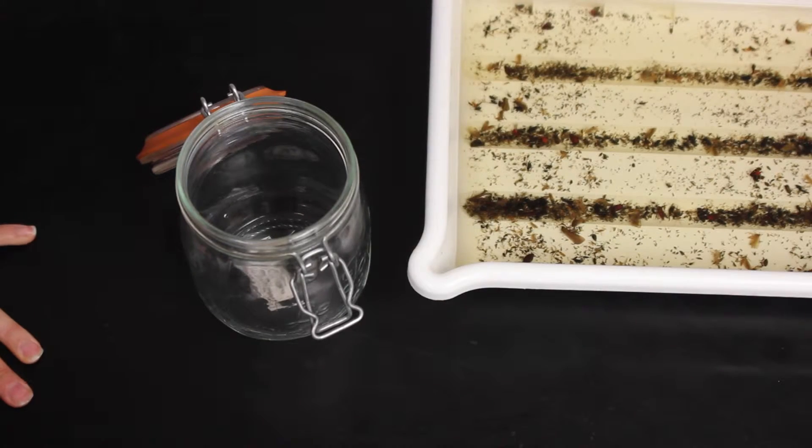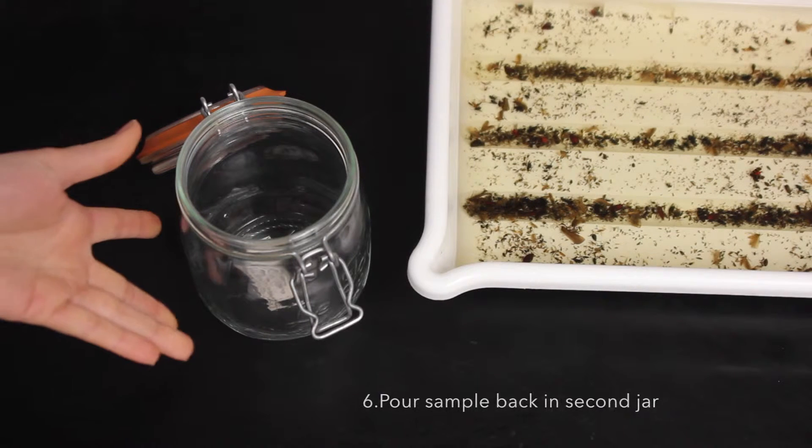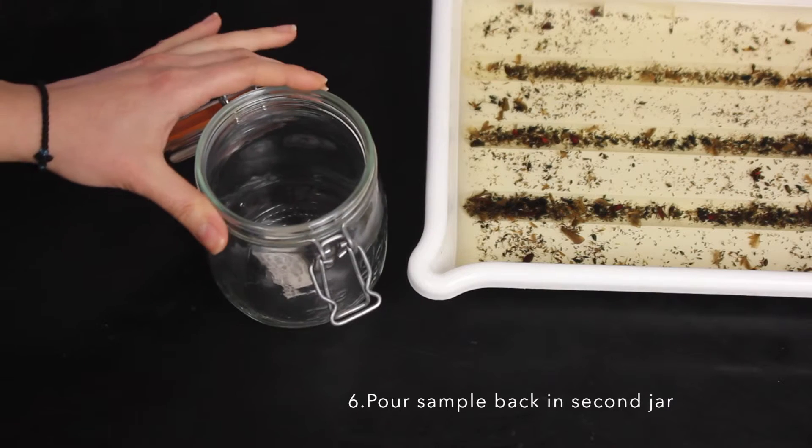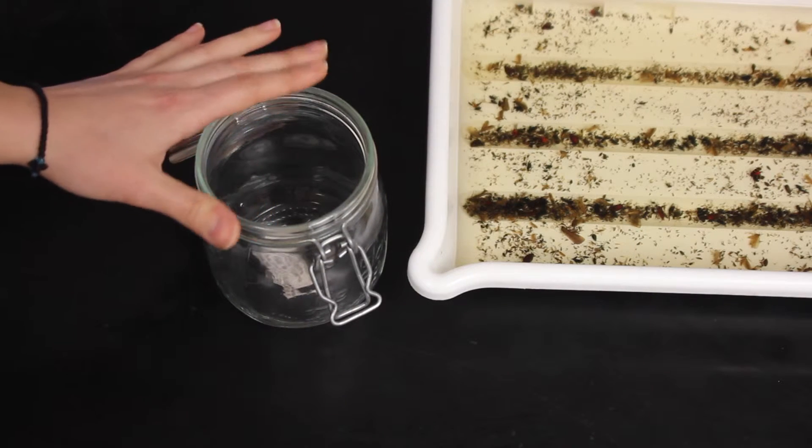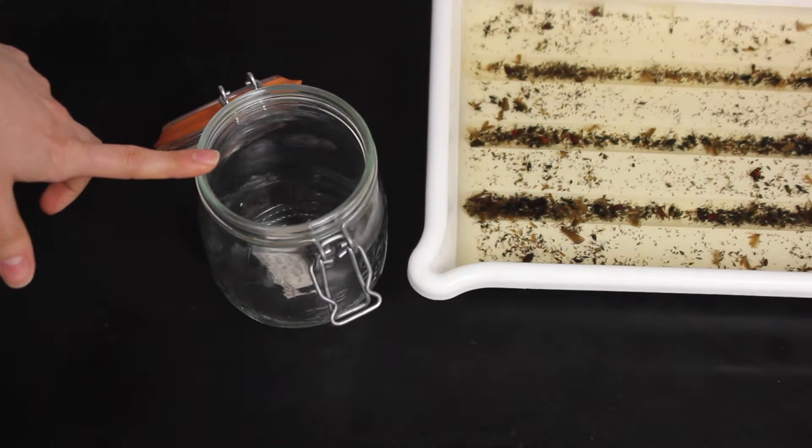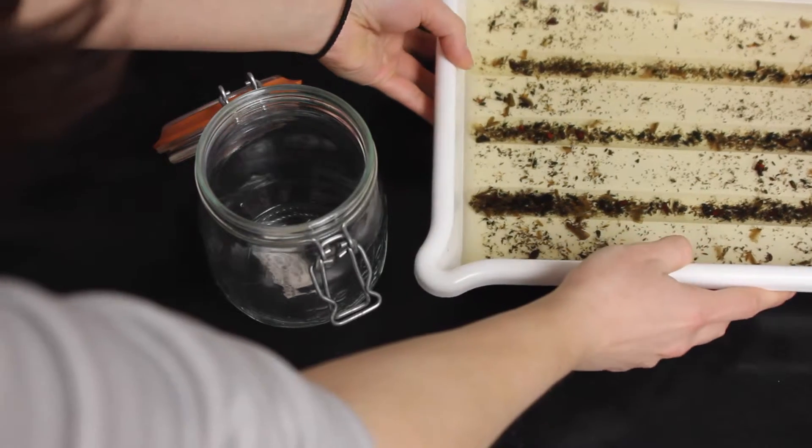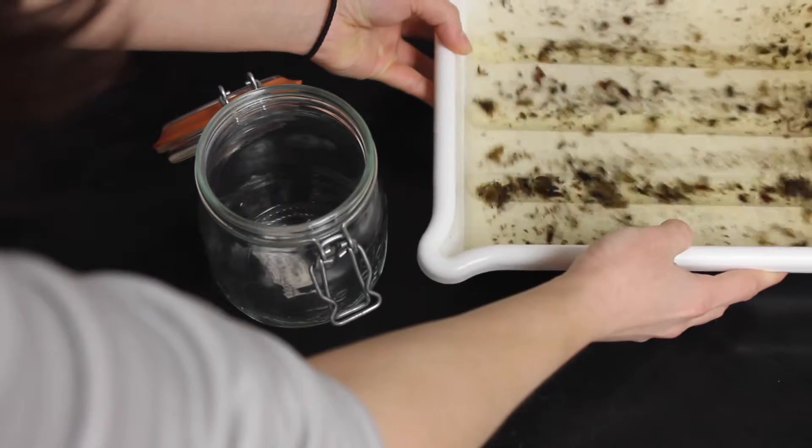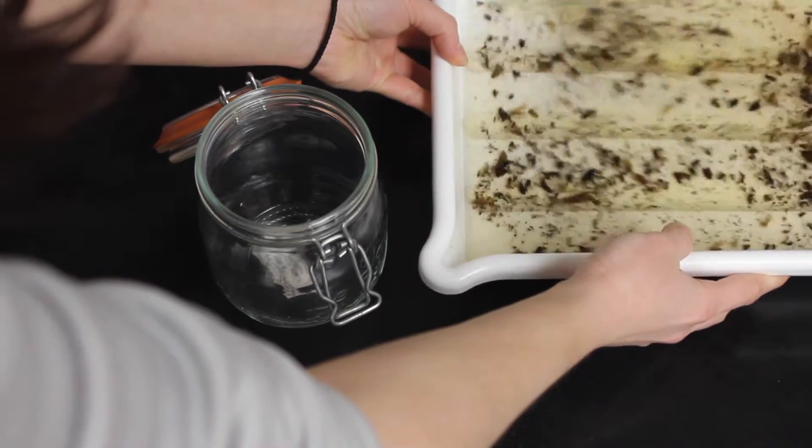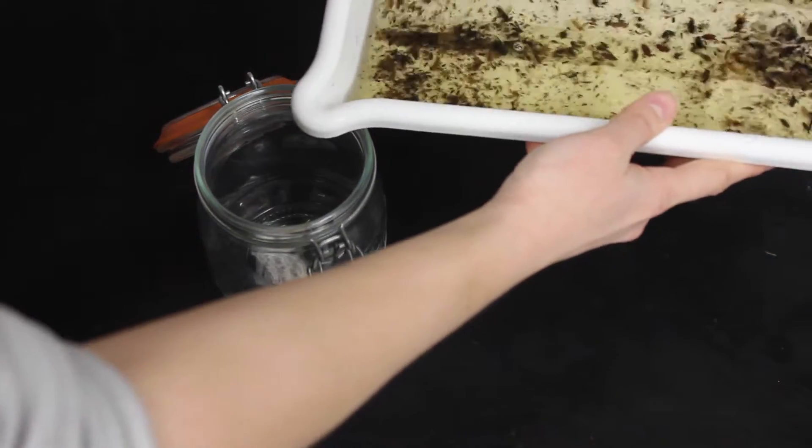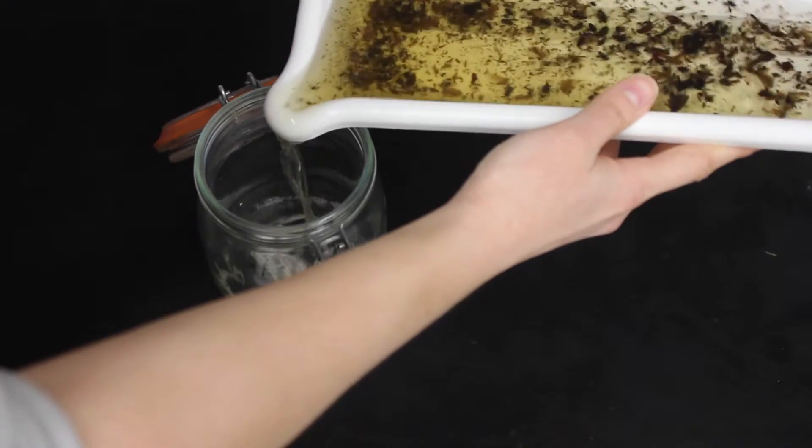Now only the small sized specimen remain. We need to pour them back into our bale top jar. And for this we use our clean bale top jar that contains the internal label that we placed in earlier. And to do so, we're going to pick this up, give it a swirl, and pour it in slowly.